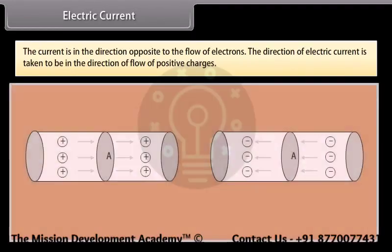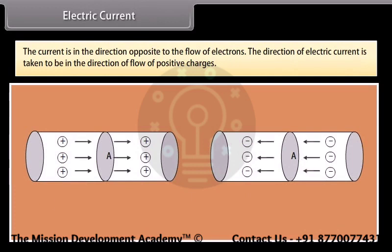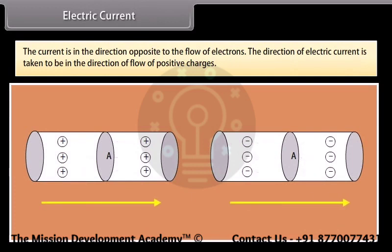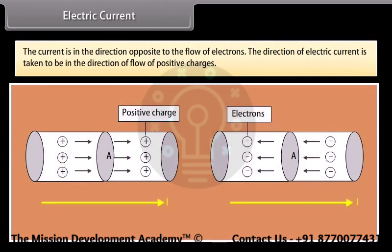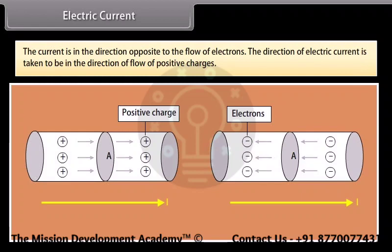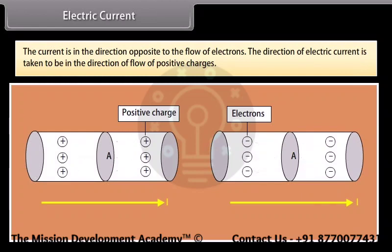The current is in the direction opposite to the flow of electrons. The direction of electric current is taken to be in the direction of flow of positive charges.